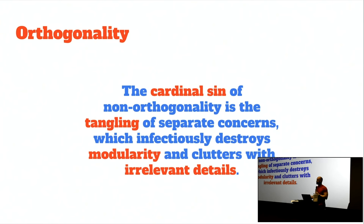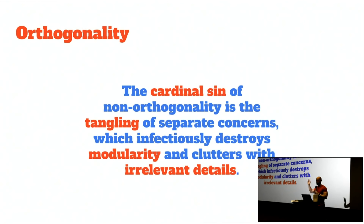Why is this a problem? It's tangling separate concerns. Whenever you tangle separate concerns in a primitive operation, that tangling propagates upwards in your application — there's no way to detangle it. Once tangled, forever tangled. It infects your codebase, destroying modularity and forcing you to deal with two things wherever you just wanted to deal with one. Eventually people give up and make a choice on one dimension, which limits flexibility and expressivity of the API.